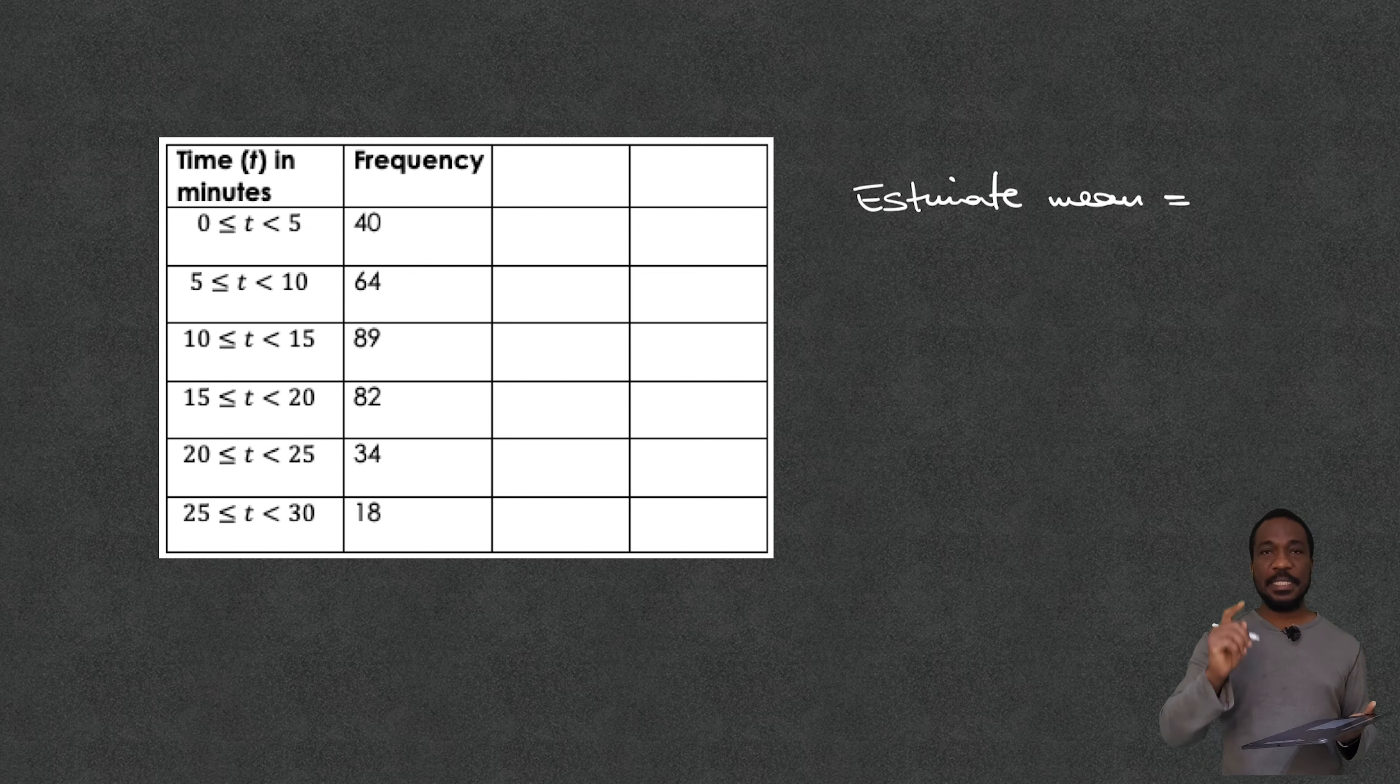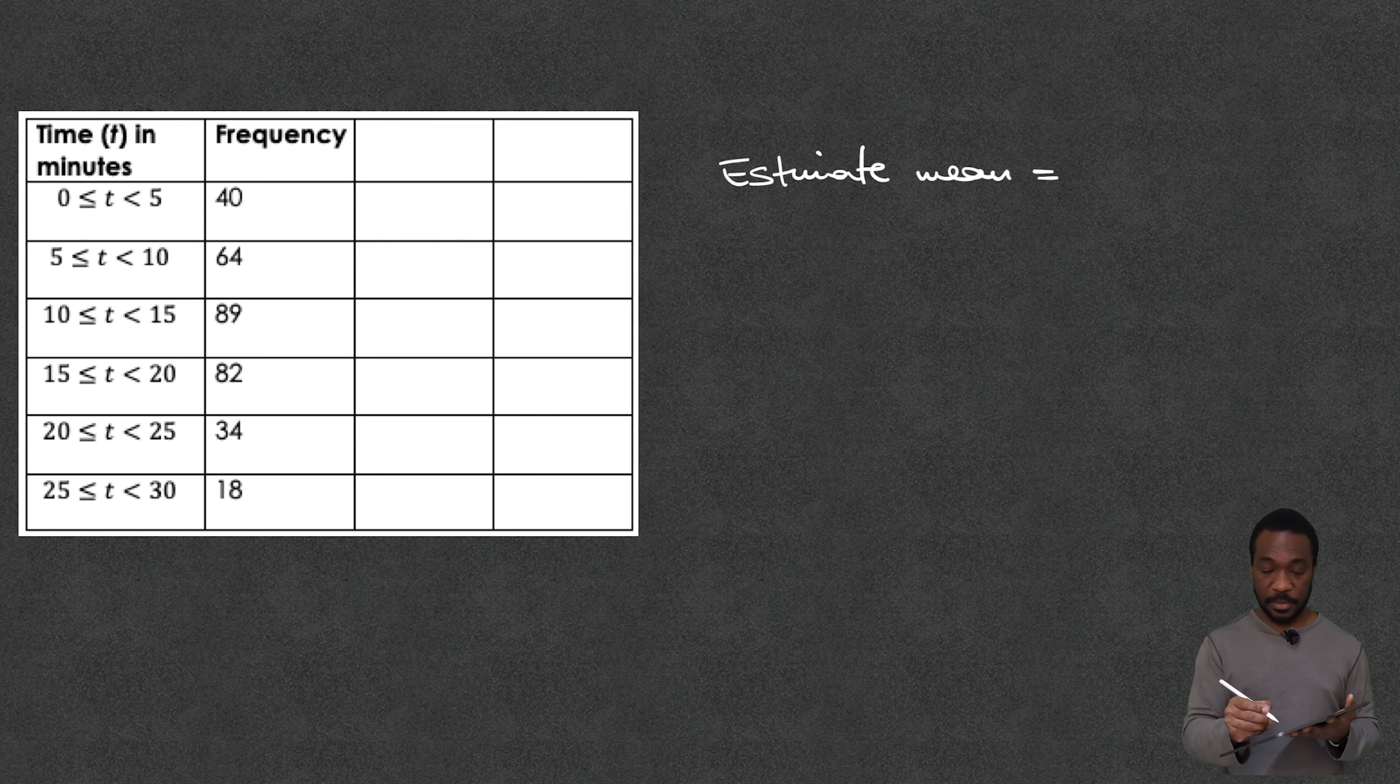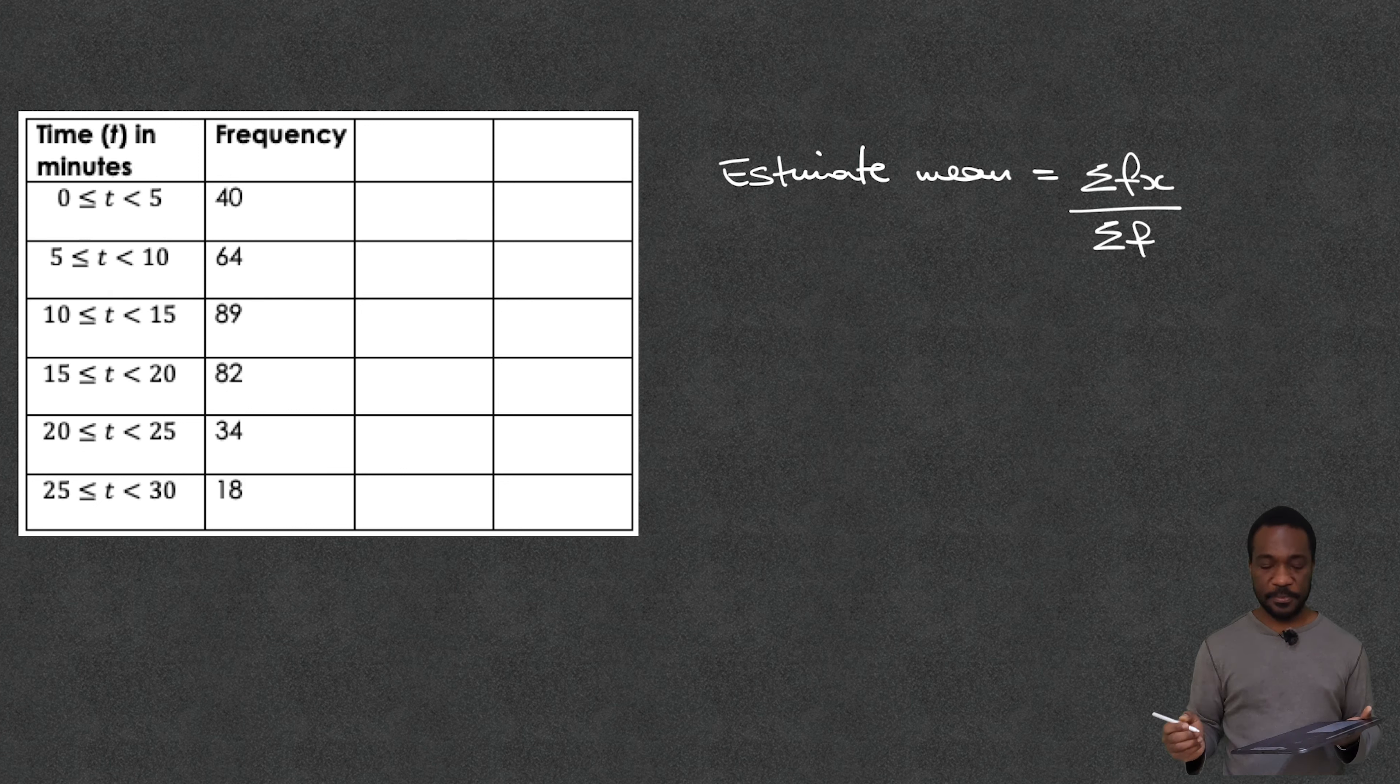And the formula is still the same from when we calculated the mean from our frequency table. The formula is still going to be the sum of fx divided by the sum of f. But where do I find all of that data?